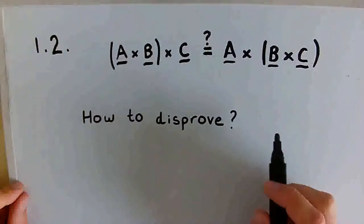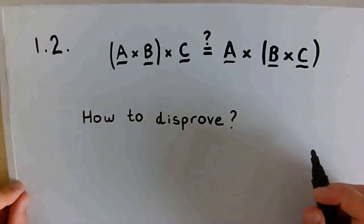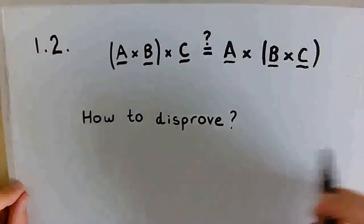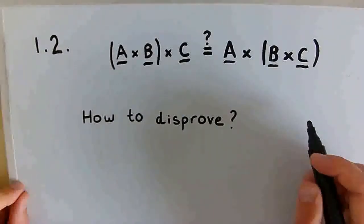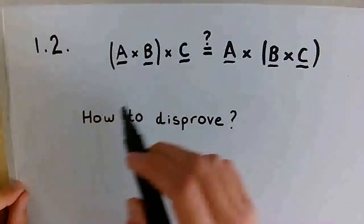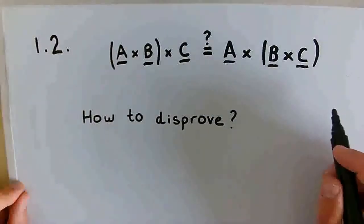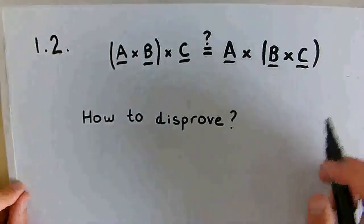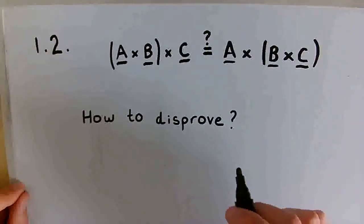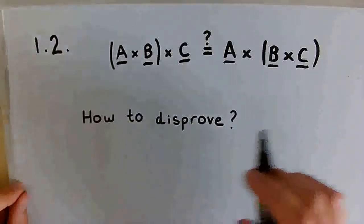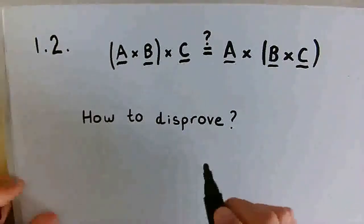Now, the question is how we're going to go about disproving or proving the associativity of the cross product. And in the wording of the question, it kind of hints to use a counterexample. But if you wanted to take the general case by splitting up each vector into its Cartesian basis, then you could do that as well. And I'm actually going to show a screenshot from Mathematica where I can disprove it in this way. So I'll show that on the screen now.